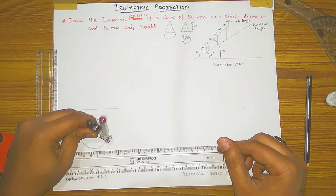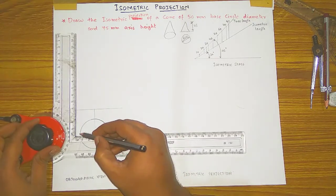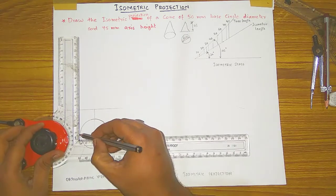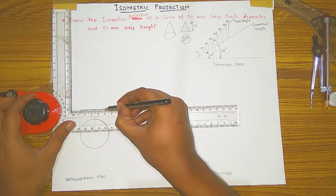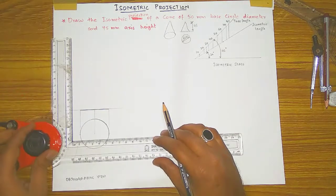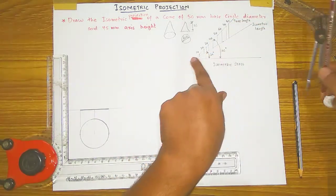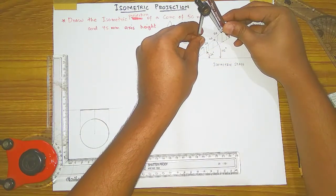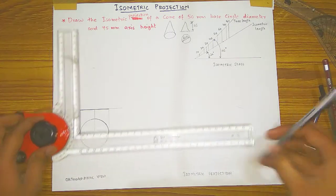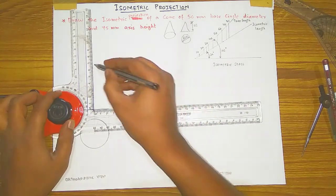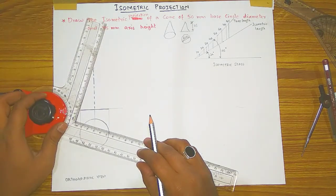After drawing the circle with isometric length, take projection lines from the center point and from both ends of the circle up to the normal line. The remaining line we get is the base of the pyramid, so darken it. To draw the pyramid you need the axis height — which is 75 mm in the question. Take the isometric scale 75 mm, adjust your divider, and draw the 75 mm axis length.